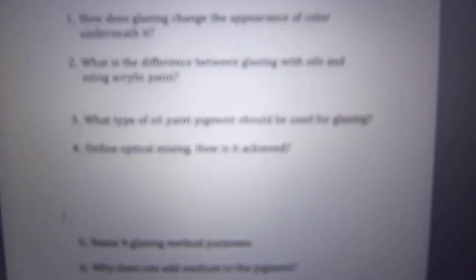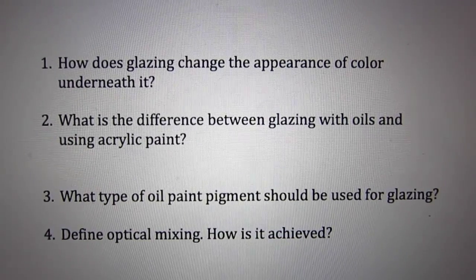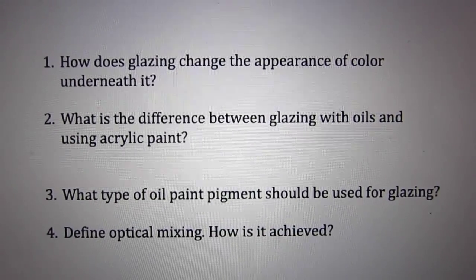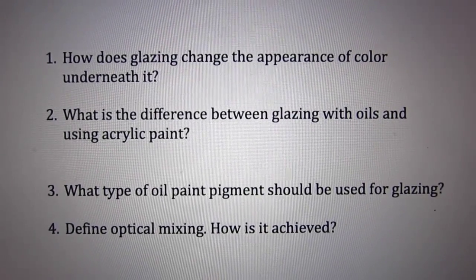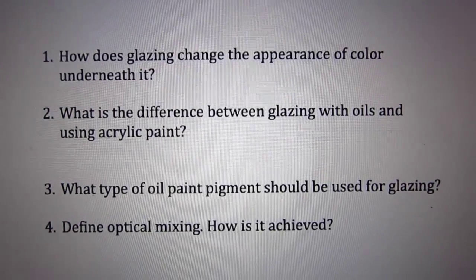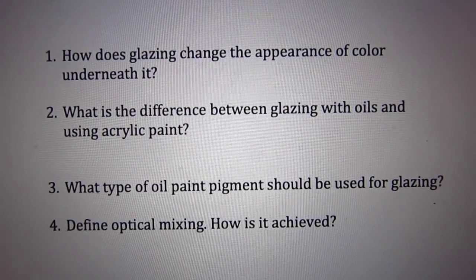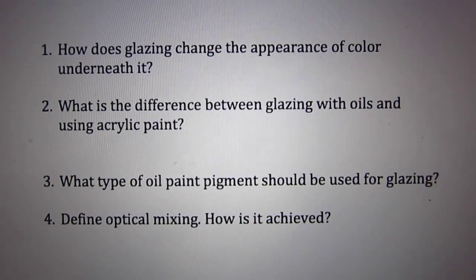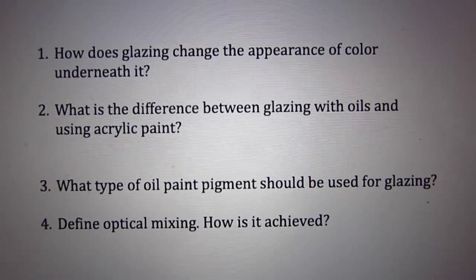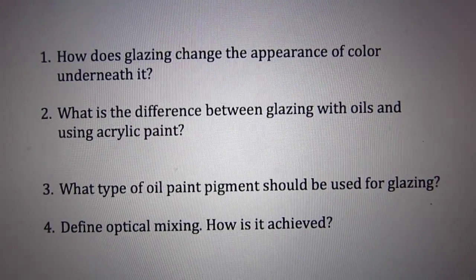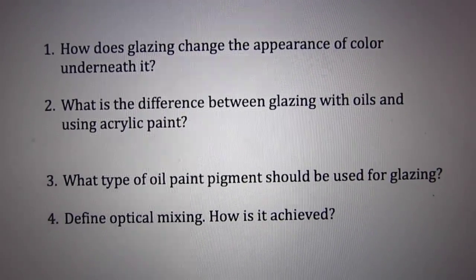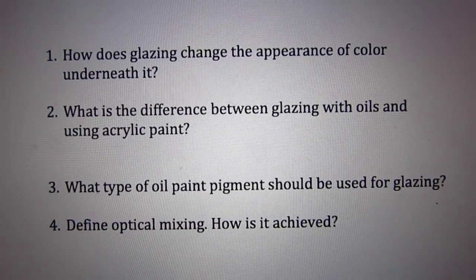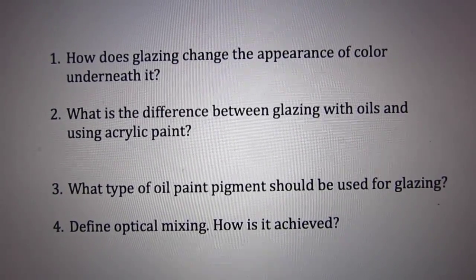Write these in your notebook and answer them please. One: how does glazing change the appearance of color underneath it? Two: what is the difference between glazing with oils and using acrylic paint? Three: what type of oil paint pigment should be used for glazing? Four: define optical mixing — how is it achieved?